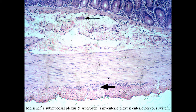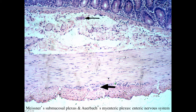At higher power in the small intestine, the bases of the crypts of Lieberkühn are visible with the lamina propria, epithelium, and luminal surface. The layers include: muscularis mucosae (inner circular and outer longitudinal), submucosa, a submucosal plexus also called Meissner's plexus with profiles of blood vessels, and the muscularis externa (inner circular and outer longitudinal) with the myenteric or Auerbach's plexus.